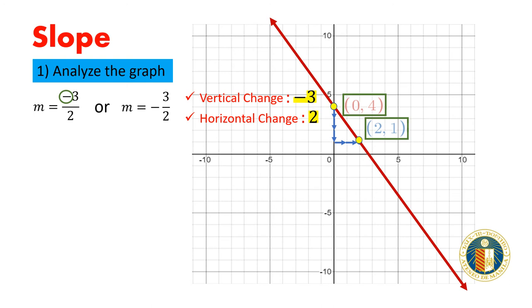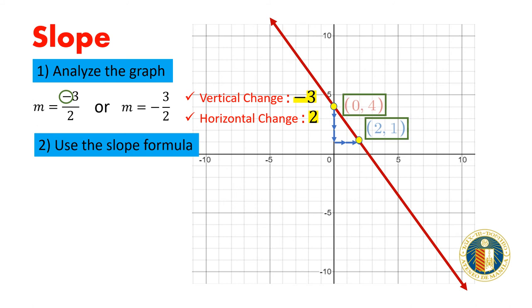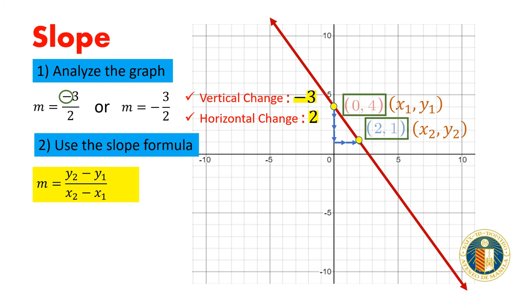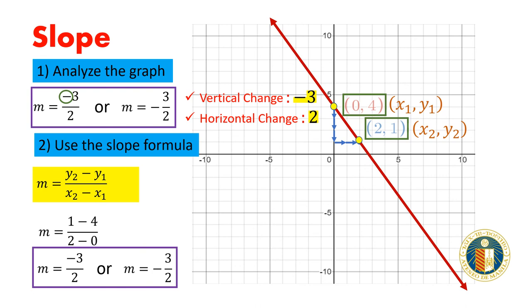The other option is to use the slope formula, which is the difference in the y-coordinates over the difference in the x-coordinates. Let the point 0, 4 be our x₁, y₁, and the point 2, 1 be our x₂, y₂. The slope would be equal to 1 minus 4 all over 2 minus 0, or negative 3 over 2. Regardless of which method we use, the slope is going to be the same.